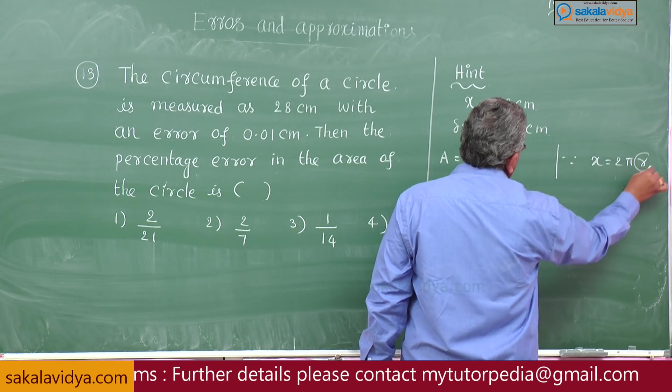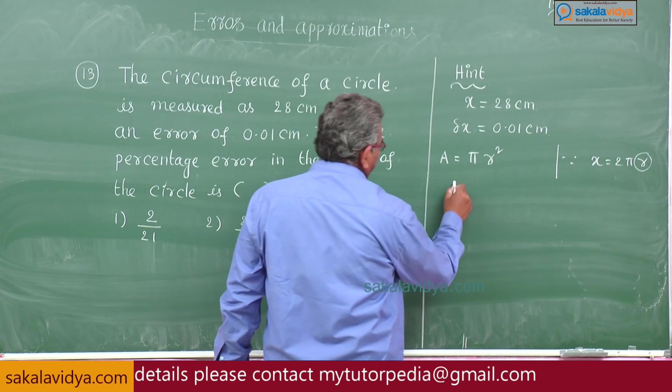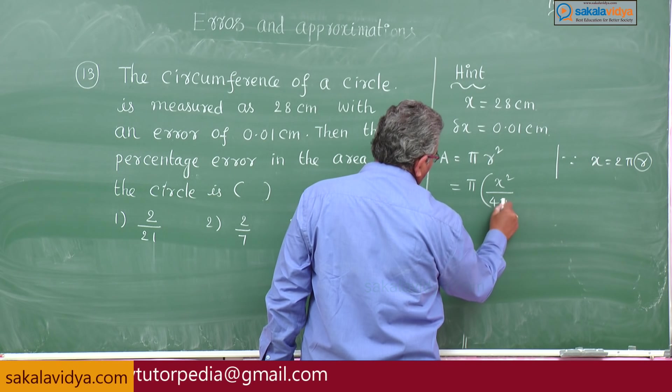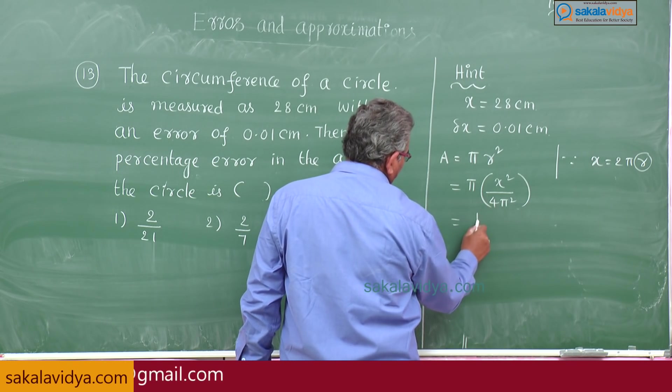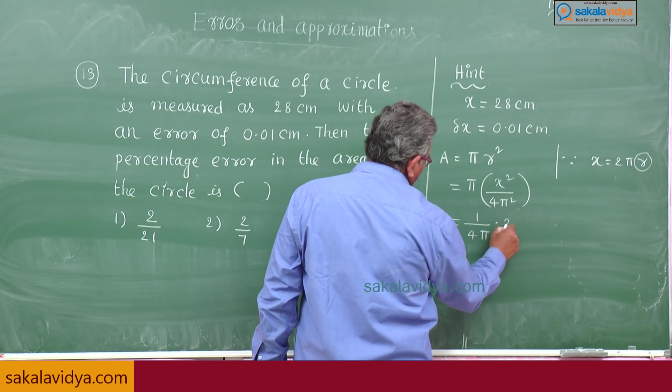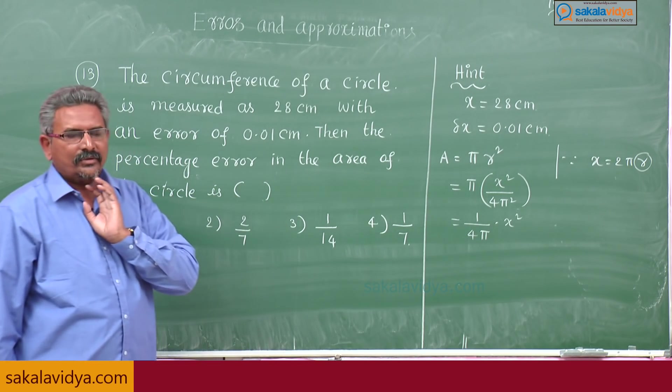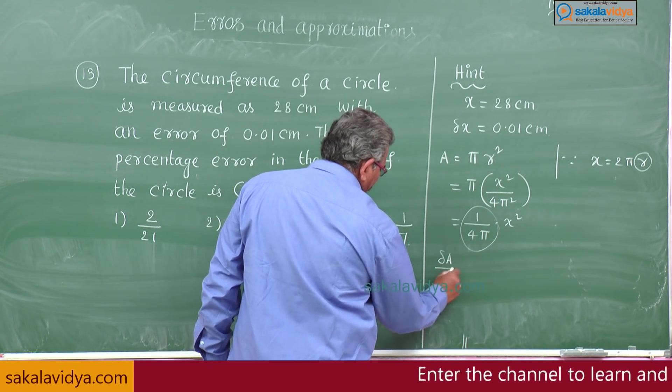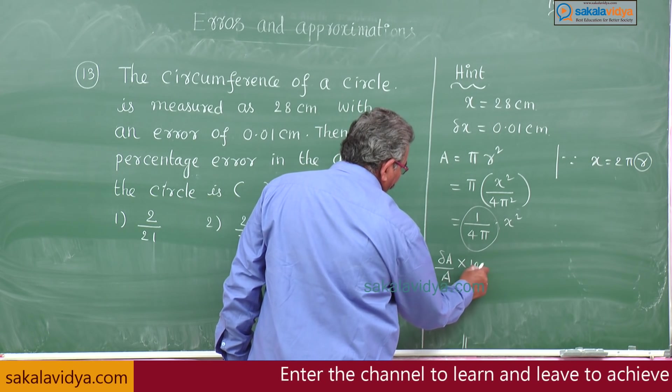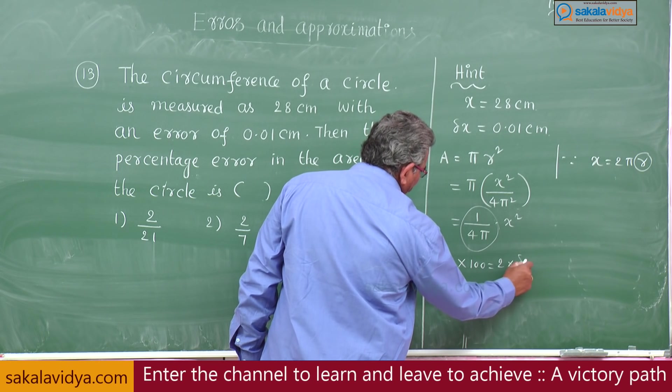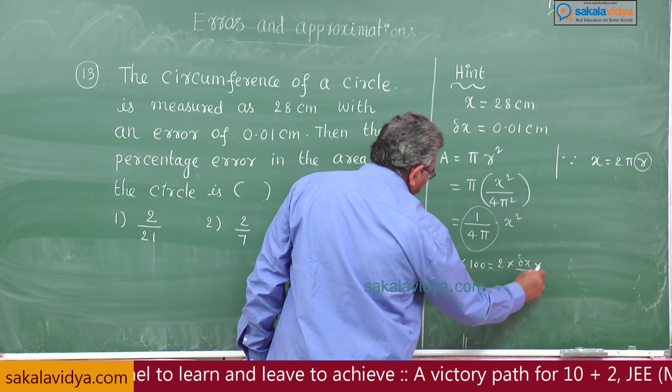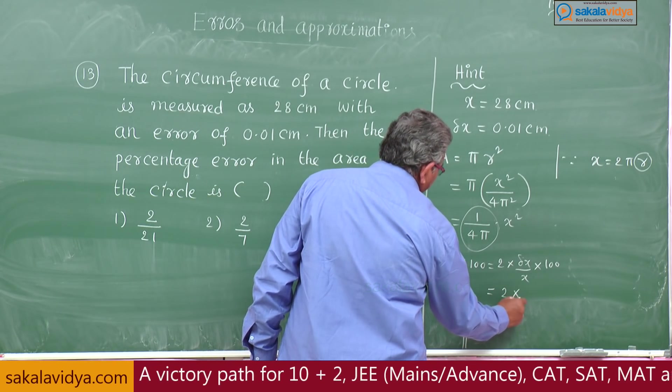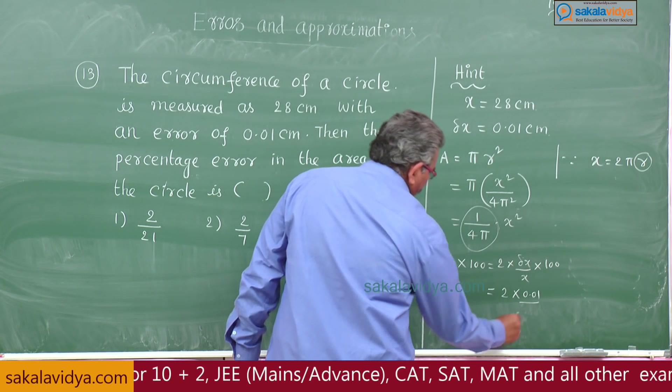Find R value: that is pi into R square equals x square by 4 pi square. You can write this is 1 by 4 pi of x square. This is constant totally, delta A by A into 100 that we have to calculate. Dimension is 2, 2 times delta x by x into 100. Now we can write 2 times delta x is 0.01 by 28 into 100.